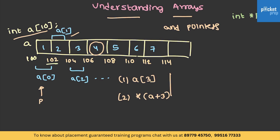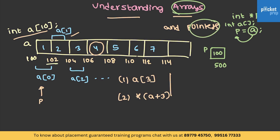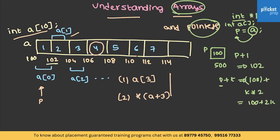I am declaring an integer pointer, and this pointer needs to store the address of the array. We know A represents the address of the array since A is an integer array, so we store that address in P. Now P is having 100 and let's say it is at a memory location of 500. Arrays and pointers follow scaled operations. As P is an integer pointer, P plus 1 will be transformed to 102, and P plus K translates to base address of P, which is 100, plus K times the size of its data type, which is 2. So it is 100 plus 2K. To access the content at a location, we use the dereferencing operator.